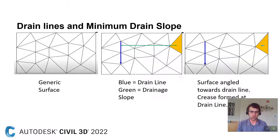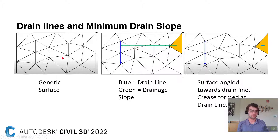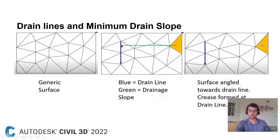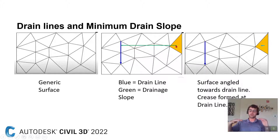Let's look at how drain lines interact with the existing grade or the existing-grade-to-finish-grade surface you're creating. On the left we have a generic surface — however many points you have, triangles are created between all those points. In Civil 3D you draw a polyline as your drain line: vertex one is the start, vertex two is the next point, and that defines the direction it's going to drain. Every triangle will meet the minimum drain slope and be angled toward that drain line.